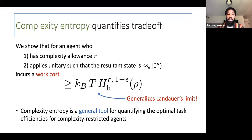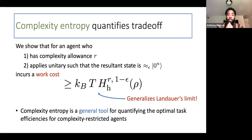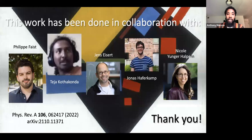The complexity entropy is a general tool for quantifying optimal task efficiencies in complexity-restricted quantum information and thermodynamics. In forthcoming work, my collaborators and I show that the complexity entropy not only quantifies this problem of data compression and thermodynamic erasure, but also randomness extraction. I invite the audience to use the complexity entropy to address all of your complexity-restricted needs. This work was done in collaboration with the following individuals and can be found at the reference links. Thank you for your time.